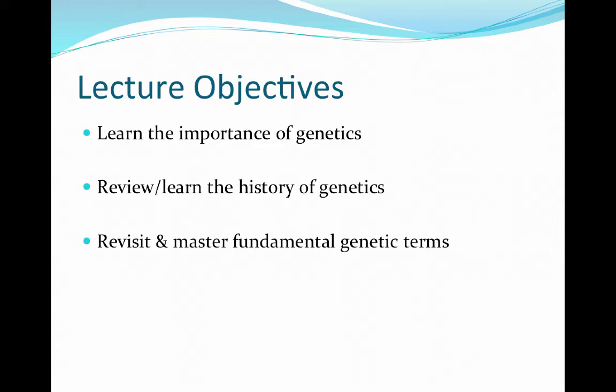What I really want you to get out of this first chapter is a good grasp on the importance of genetics and how it has really determined some of the phenotypes and characteristics of agricultural commodities and products we see today. We're also going to go through some of the history related to genetics, because it's going to be very important, especially when it comes to transmission genetics, and it's really going to dictate how we utilize genetic technology today. Our last major objective for chapter one is to revisit and master genetic terminology.